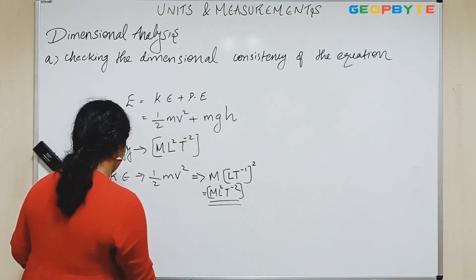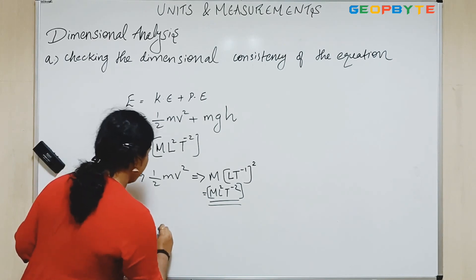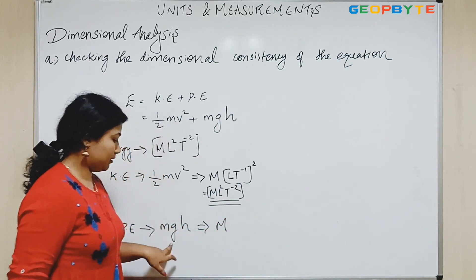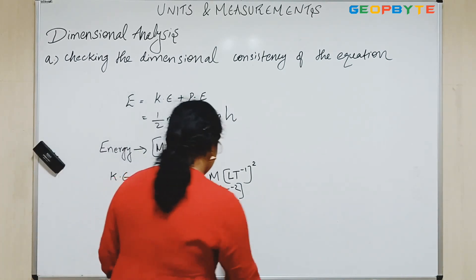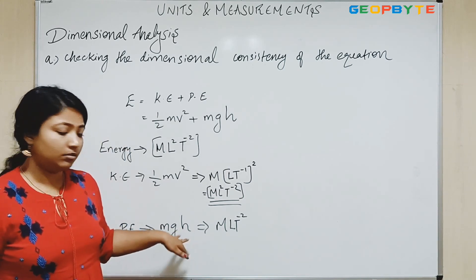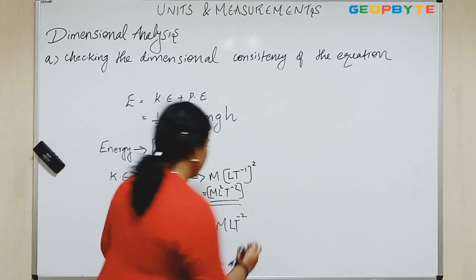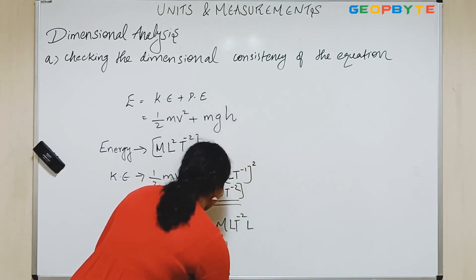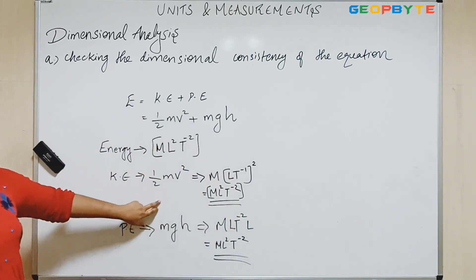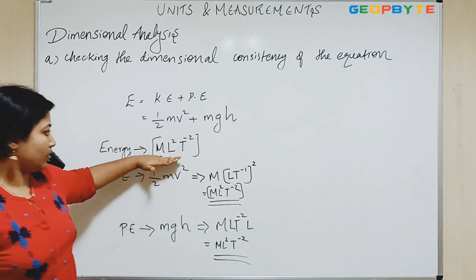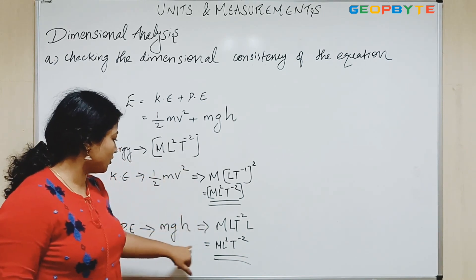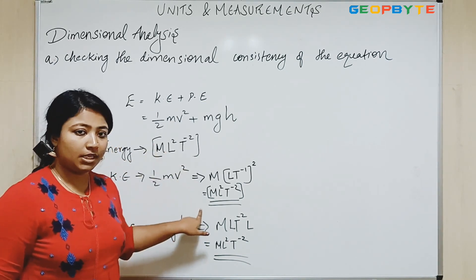Potential energy is M G H. M is mass. G is acceleration, so the dimensional equation of acceleration is L T to the power minus 2. And H is again length, represented as L. So this can be written as M L squared T to the power minus 2. So for total energy, kinetic energy, and potential energy — all give the same dimensional equation: M L squared T to the power minus 2.